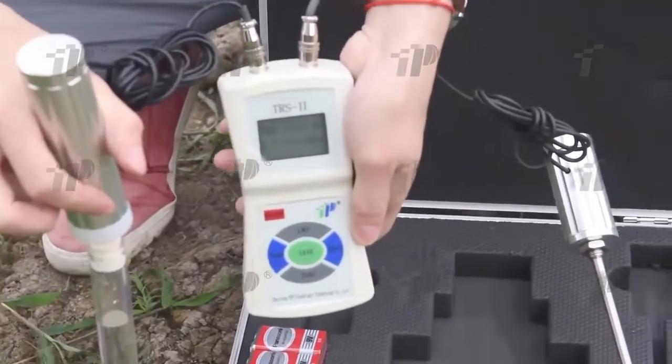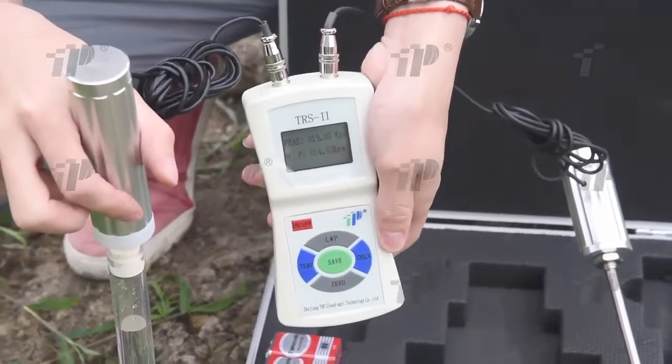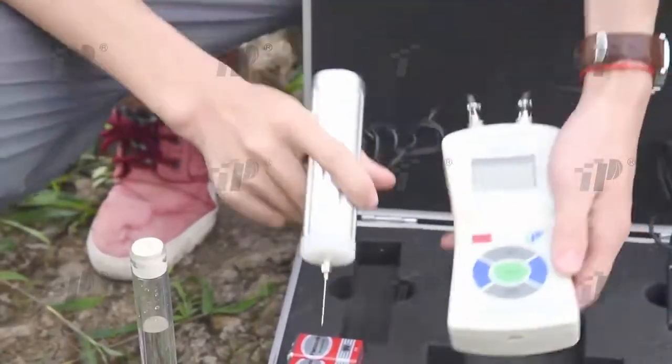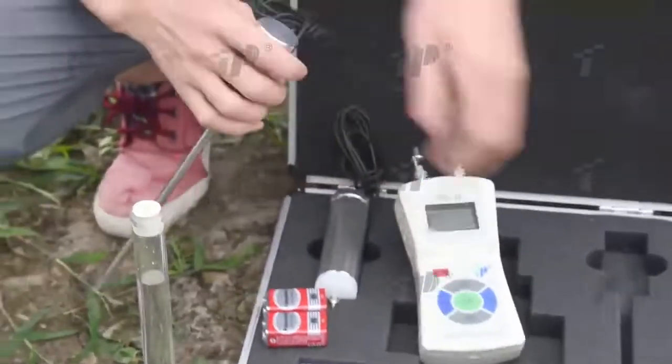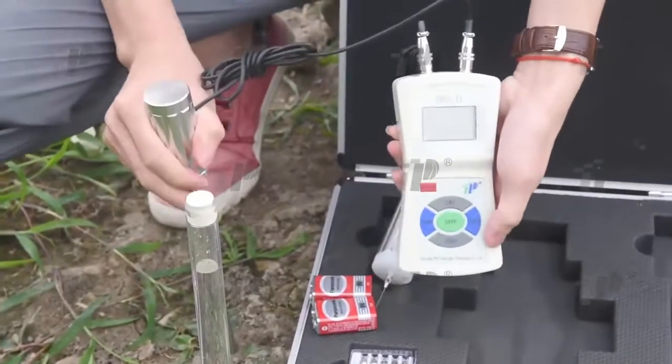After water penetrates to every water potential probe rubber stopper one by one, read each measuring point's water potential data from the LCD. Readings should be taken in the morning when temperature changes are smaller.